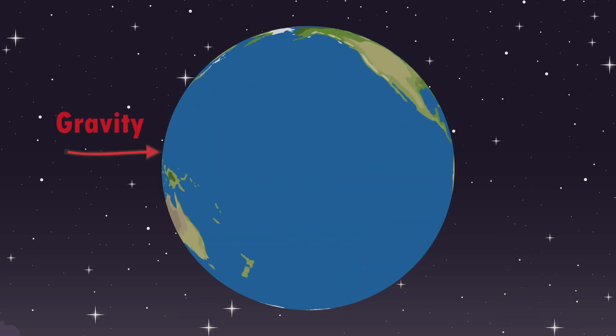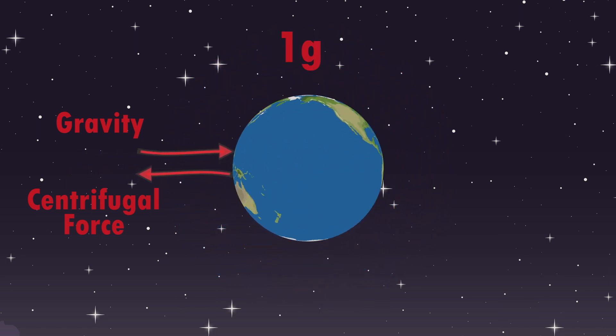Gravity acts in this direction, while the centrifugal force acts in the opposite direction. The acceleration due to gravity of every object on Earth is 1g.